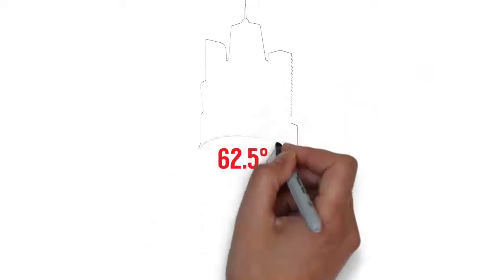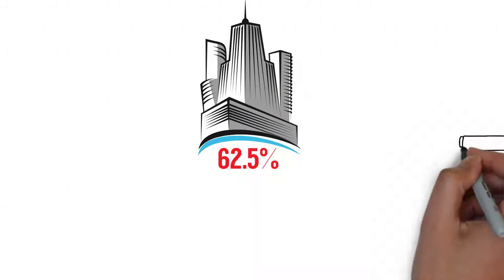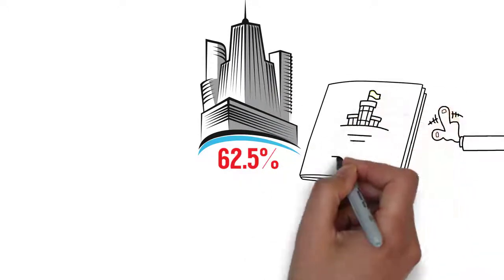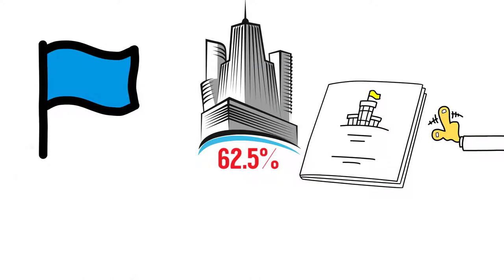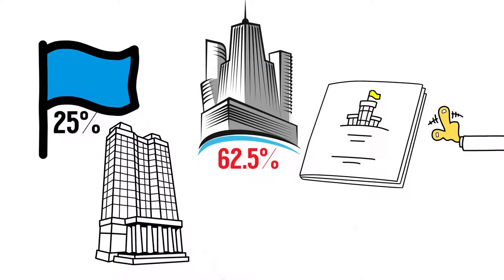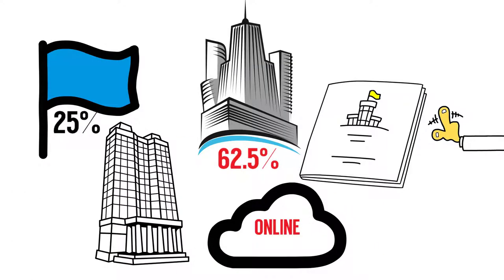62.5% of analyzed sport organizations haven't published the values of their organization on their web page. On national level, only 25% of the organizations ensure that such data is available online.